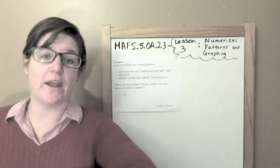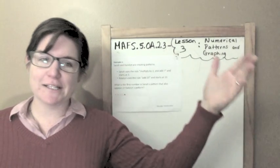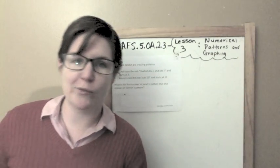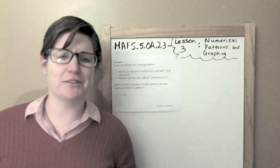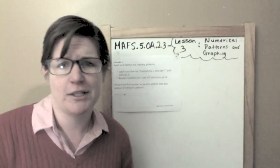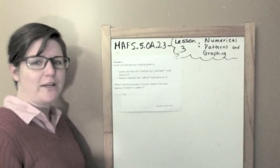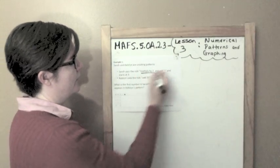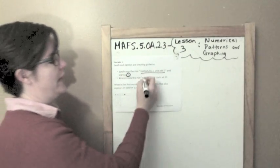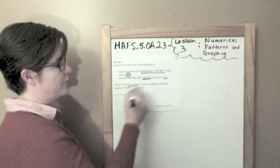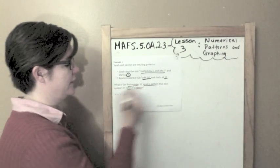Example 1. Sarah and Caitlin — Sarah is me, Caitlin is my partner in crime where I work. Shout out to you, Caitlin! So Sarah and Caitlin are creating patterns. Sarah starts with the rule multiply by 2 and add 7, starting at 3. Caitlin uses the rule add 20 and starts at 13. What's the first number in Sarah's pattern that will also appear in Caitlin's pattern?